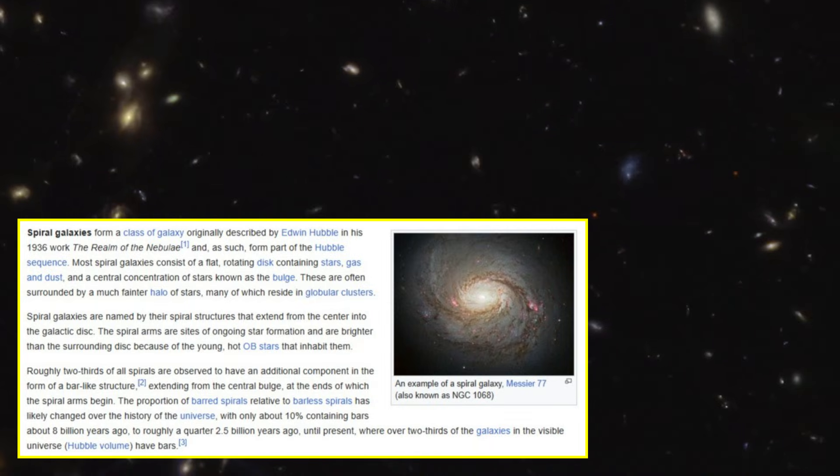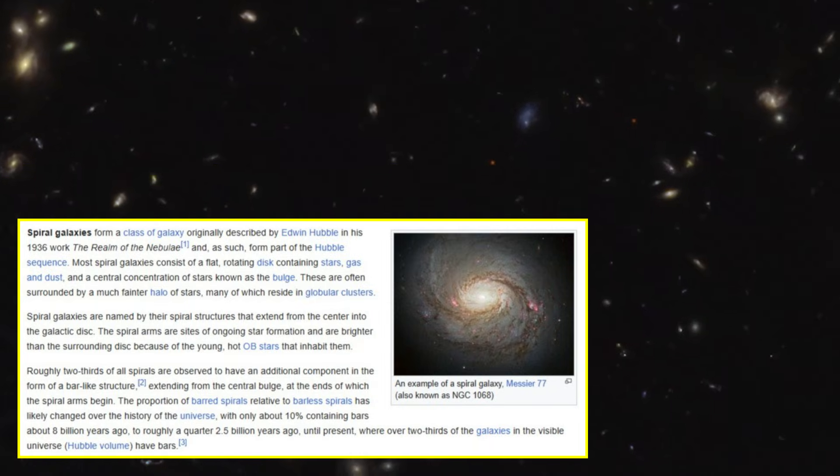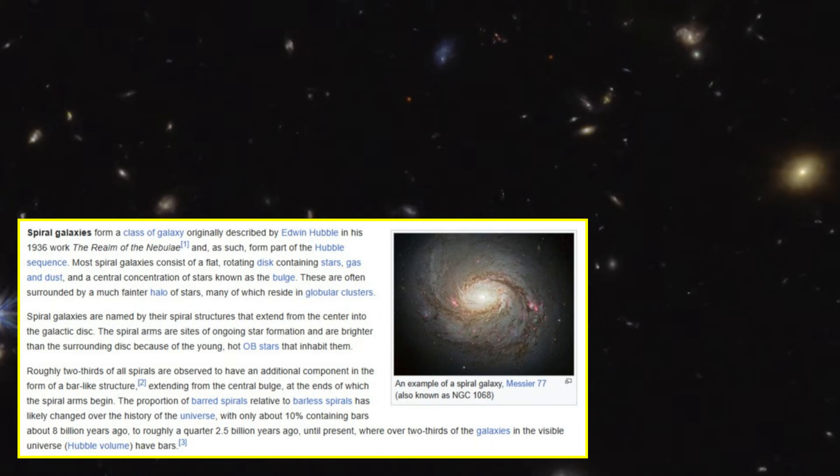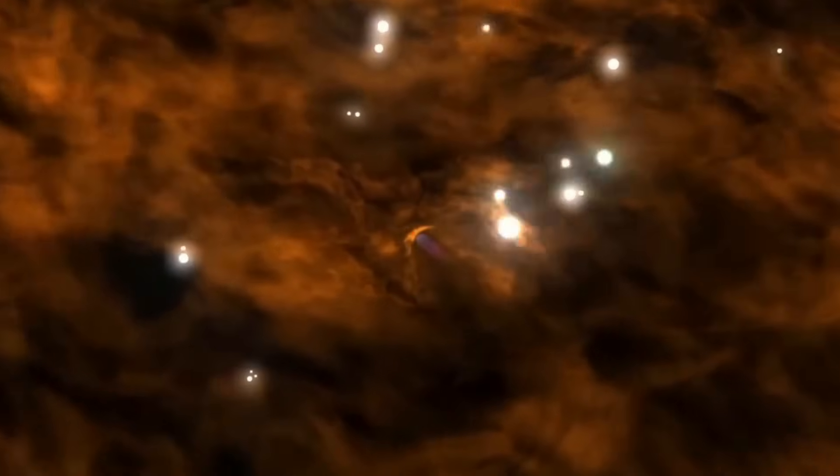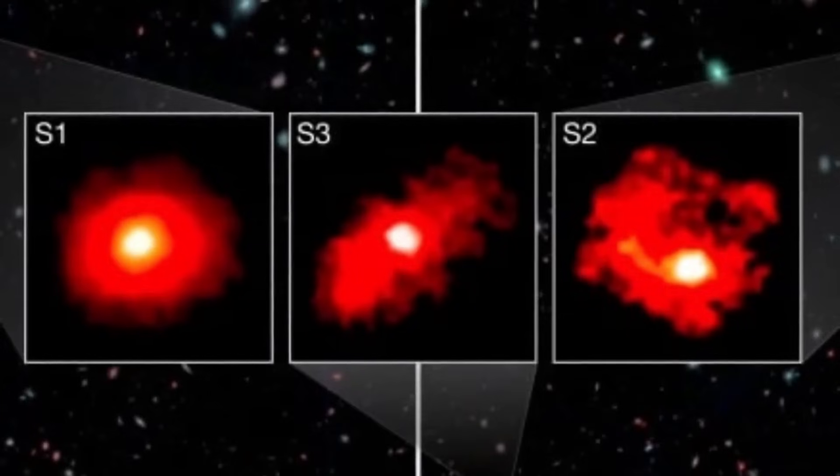Previously, scientists believed that spiral galaxies took much longer to develop their distinct shapes. Now, these discoveries are very puzzling because some galaxies are supporting the standard cosmic model, while others are completely contradicting it. These galaxies are explaining a universe that is too complex to even imagine.